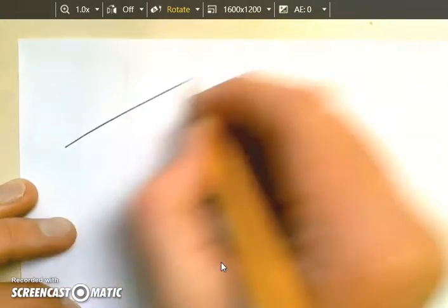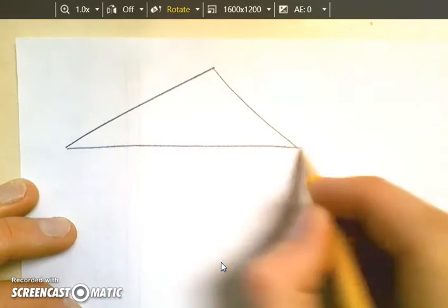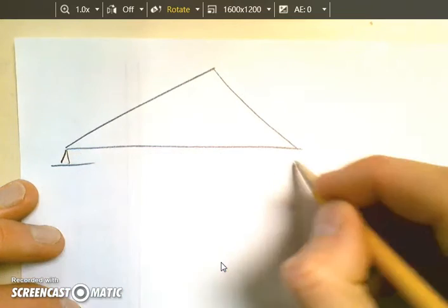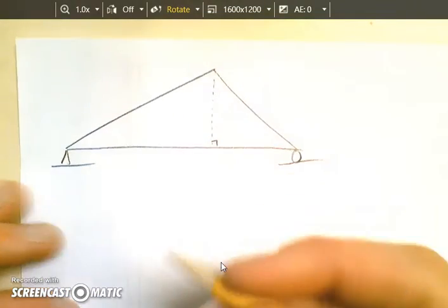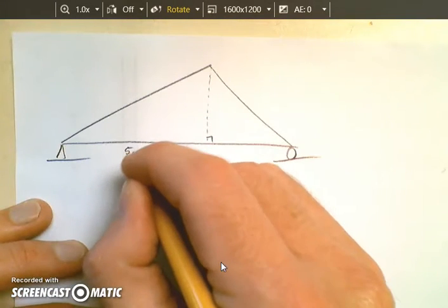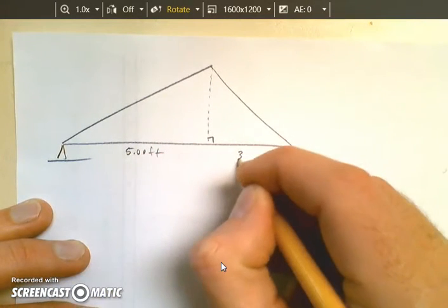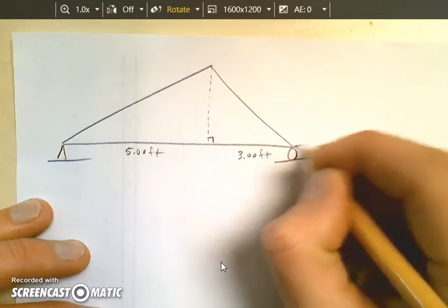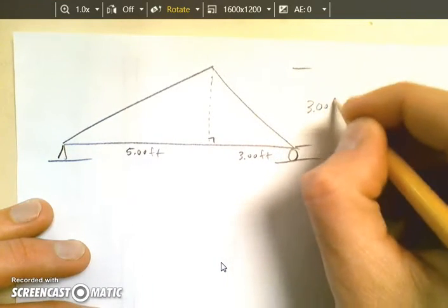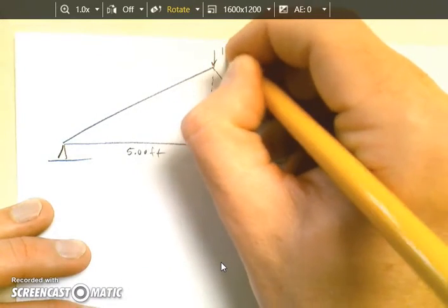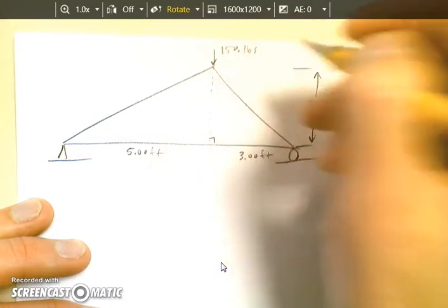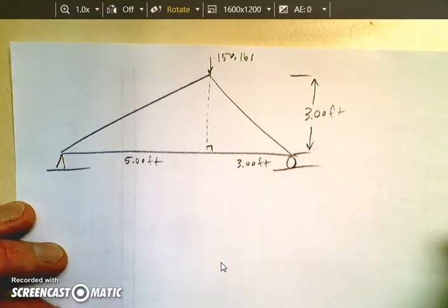Alright, today we're going to go through how to solve a three-member truss. So we have a pin and a roller. We're going to drop a vertical here, so that way I'm going to give you a couple dimensions of 5 feet and 3 feet. I'm going to give a height of 3 feet. And we're going to put a 150 pound load right there on the top.